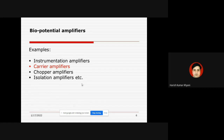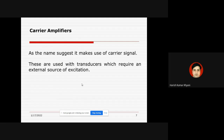Other examples include carrier amplifiers, chopper amplifiers, and isolation amplifiers. Today we will be discussing carrier amplifiers. As its name suggests, carrier amplifiers make use of a carrier signal, which brings in the important signal conditioning process of modulation, since whenever modulation takes place we make use of carrier signals.